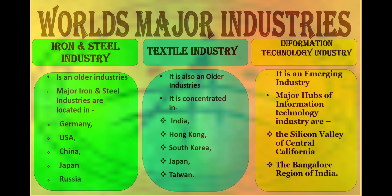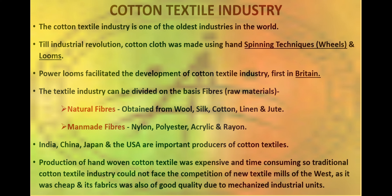Textile industry is another older industry concentrated in India, Hong Kong, South Korea, Japan, and Taiwan. Till the industrial revolution, cotton cloth was made using hand spinning techniques and looms. For the first time in Britain, the power loom facilitated the development of the cotton textile industry. On the basis of fibers, the cotton textile industry can be classified into two groups.